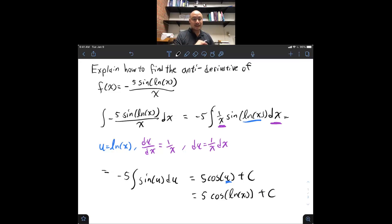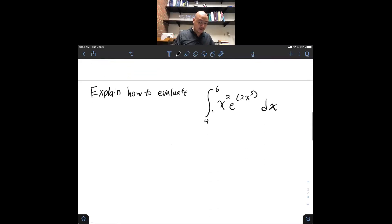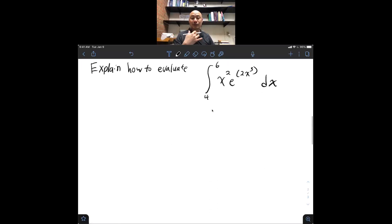Alright. Now, to the second part of the problem, where we are explaining how we would evaluate the definite integral from 4 to 6 of x squared e to 2x cubed.